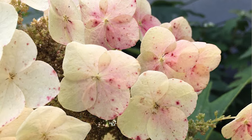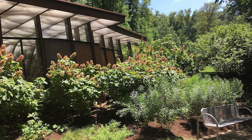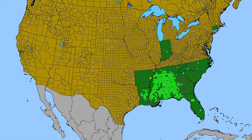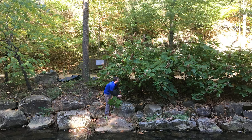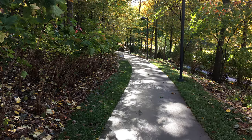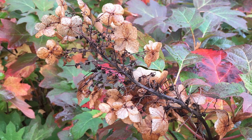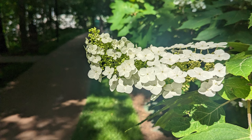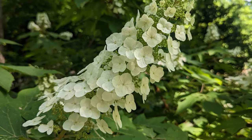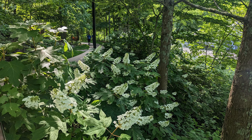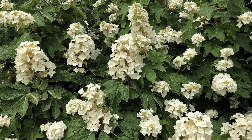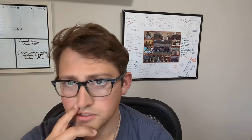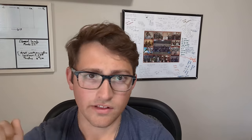One of my all-time favorite shrubs is oakleaf hydrangea. This is a really solid shrub — the texture on these, even when they don't have flowers, is just incredible. They really pop, especially in the shade. These are a large shrub growing from 10 to 12 feet tall and wide. They make beautiful white flowers in May to June, which then dry into a pinkish brown through late summer into fall. They make a great framework or backdrop for any landscape design. They prefer full sun for optimal flowering but do grow in part shade, though in full shade they can get a little leggy.